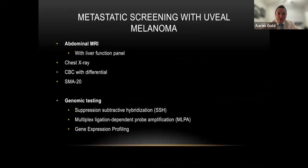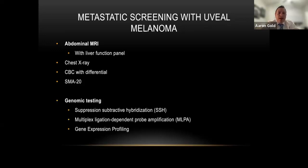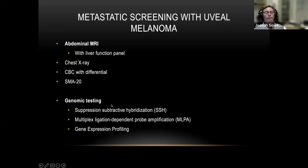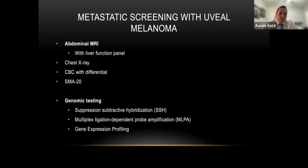That's how we control radiation damage inside the eye, but what about the rest of the body? We want patients to have metastatic screening. We usually have a medical oncologist or their primary doctor order the liver function panel and abdominal MRI if they're comfortable. More recently we've been employing different types of genomic testing. Suppression subtractive hybridization showed downregulation of the EDNRB gene in melanoma associated with metastasis. MLPA tested 31 genes on chromosomes 1, 3, 6, and 8 but didn't correlate with metastasis. Gene expression profiling does.